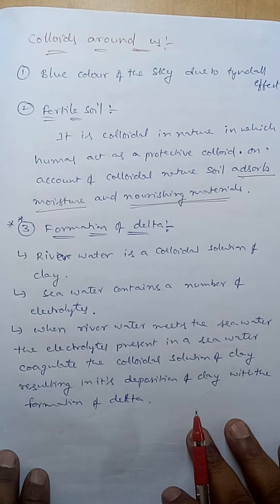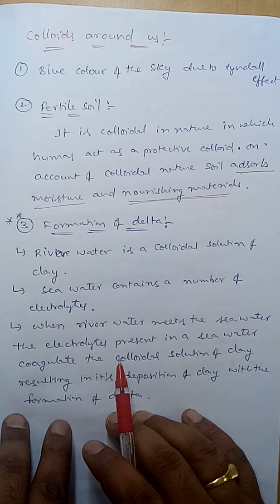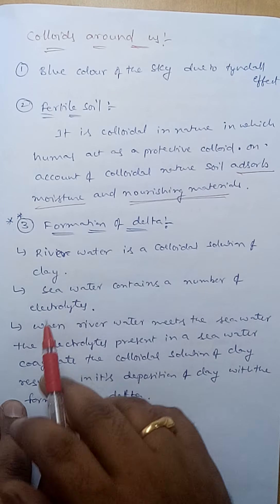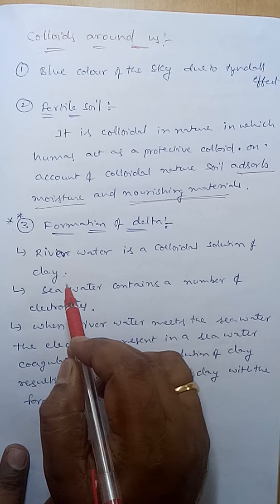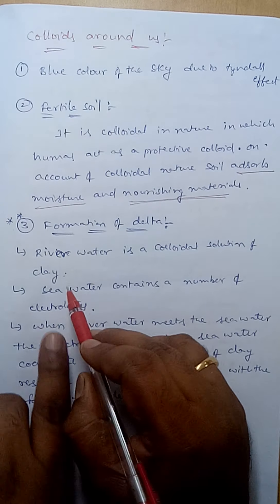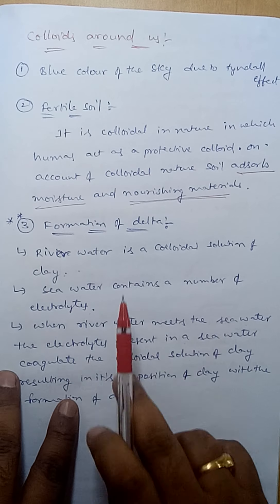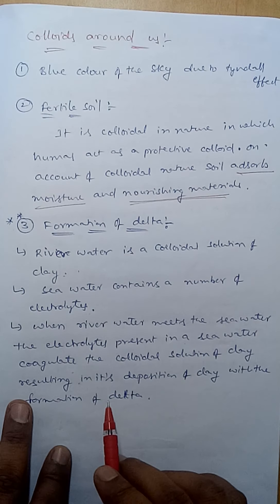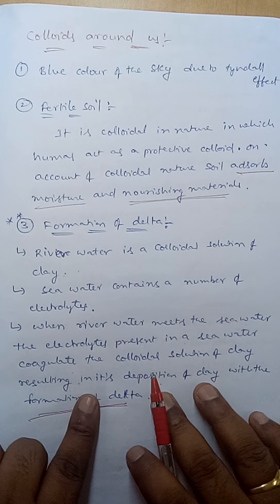Delta formation is very important for objective examinations. Deltas form where river water meets sea water. River water is a colloidal solution of clay, while sea water contains a number of electrolytes. When river water meets sea water, the electrolytes present in sea water coagulate the colloidal solution of clay, resulting in the deposition of clay and the formation of a delta. Coagulation means the conversion of a colloid into a precipitate.